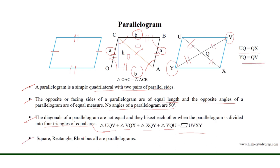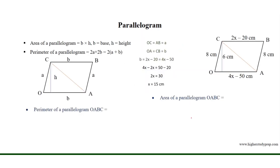Square, rectangle, and rhombus are all parallelograms. The area of a parallelogram is equal to base multiplied by the height, and the perimeter of a parallelogram is equal to 2 multiplied by the sum of the length of one pair of parallel sides plus the length of the other pair of parallel sides.